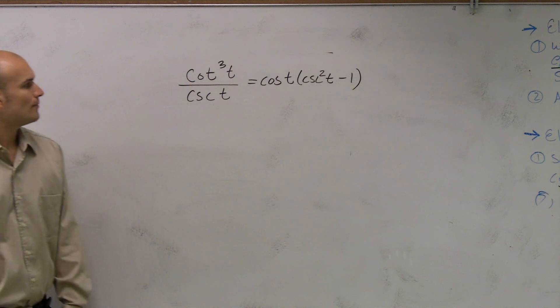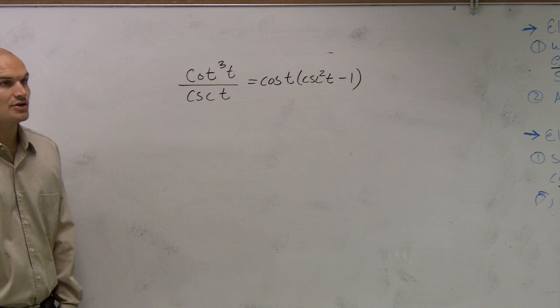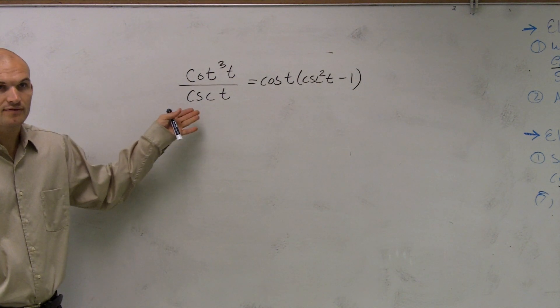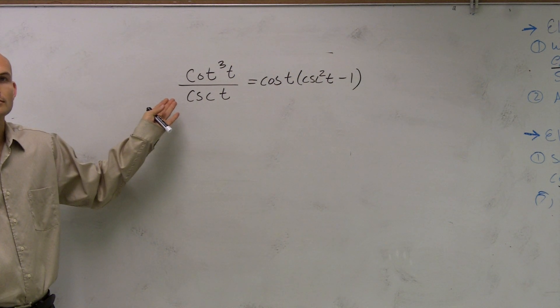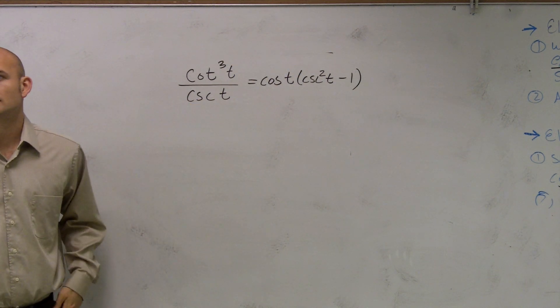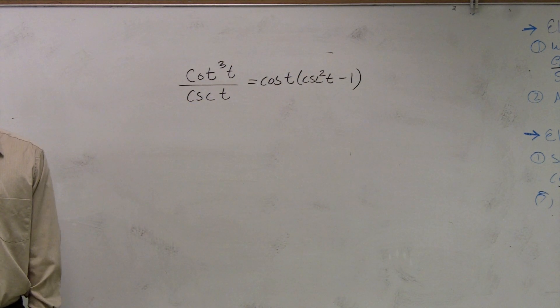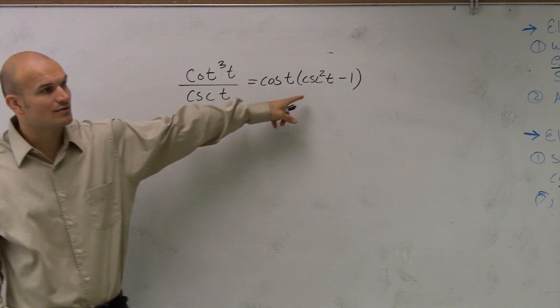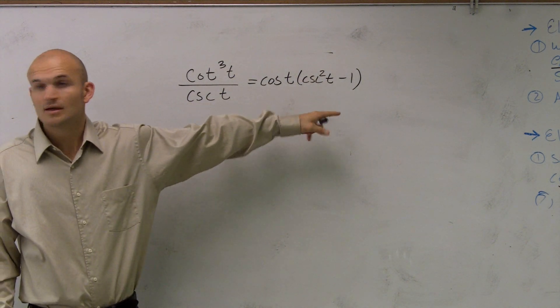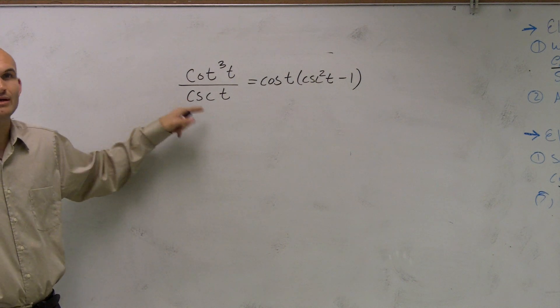Alright, so usually the first thing I like to do is I like to get rid of my fraction. Because I really don't like dealing with fractions. And obviously, the right side is not a fraction, right? So the first thing is, remember, how do we get rid of fractions? Do you guys remember what you need to multiply your denominator by?